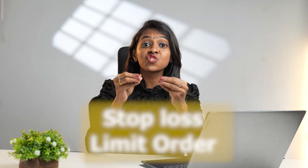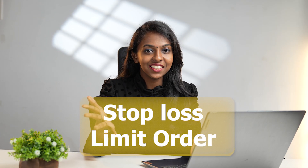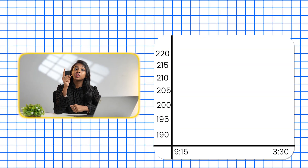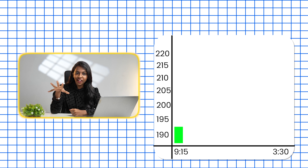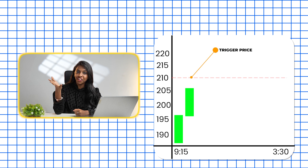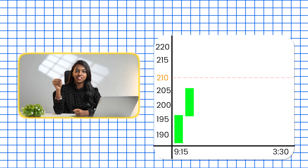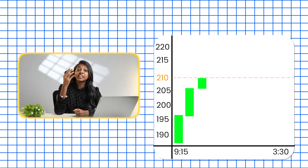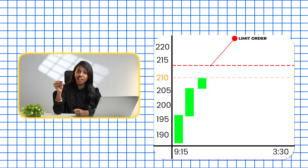The fourth order type is the stop-loss limit order for buying. You can also use a stop-loss limit order for buying. For example, if a stock is trading around 200 rupees and you think the price will rise, you can place a stop-loss limit order around 210. Once the 210 level has been breached, the limit order will get triggered at 211 to execute. But like previous orders, executions are not guaranteed and slippages can happen.